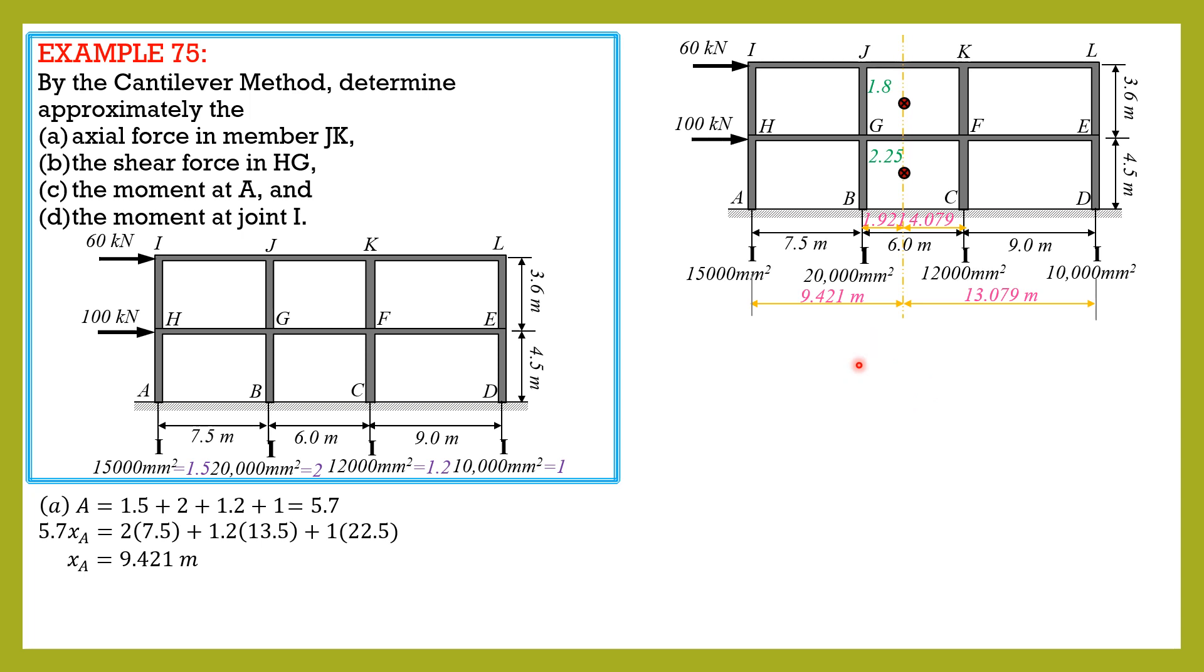So i1 equals i2 because the column areas are the same. And it is equal to summation of area distance square. So area A 1.5 distance 9.421 square, plus 2 times 1.921 square, plus 1.2 times 4.079 square, then plus 1, common area of this column 1 times 13.079 quantity square. So i1 equals i2 equals i equals 331.54 units to the fourth.